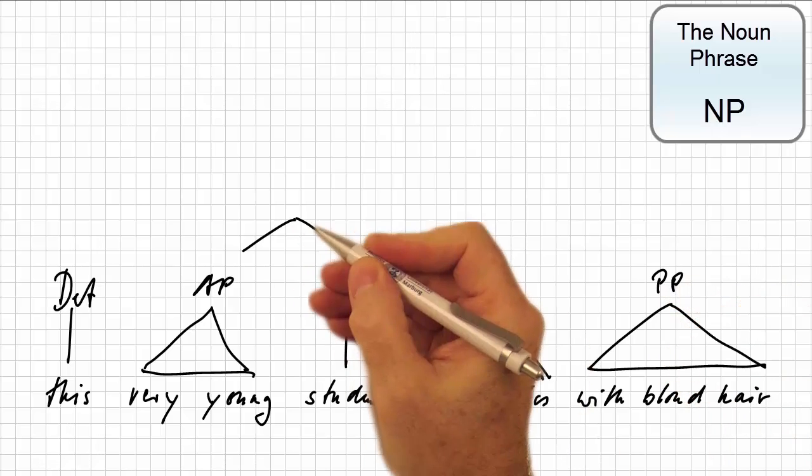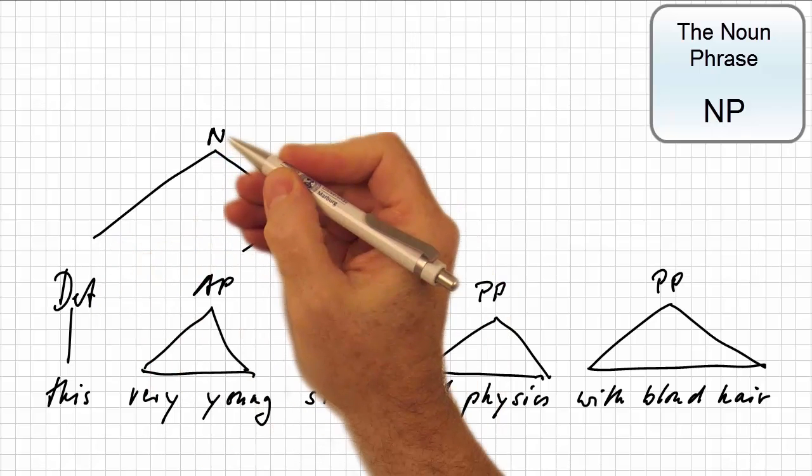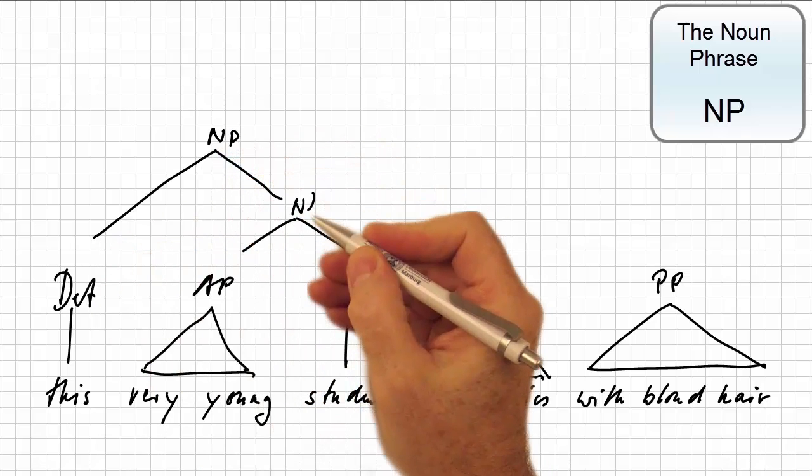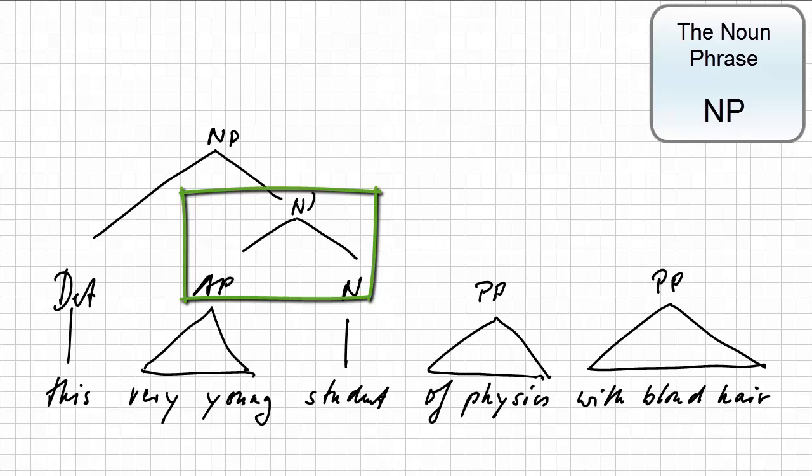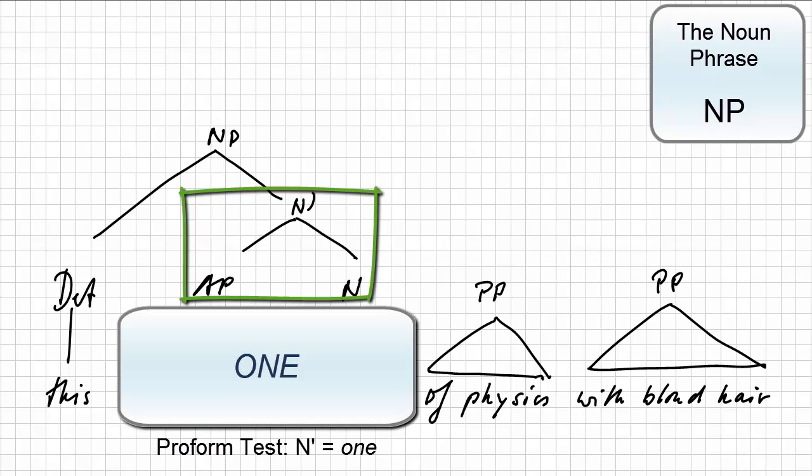Let's now connect them. Clearly, the adjectival phrase and the head noun form a constituent. Why? Well, we can replace them by the proform one, as in this one.